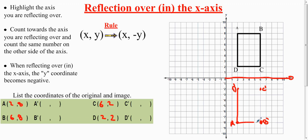A goes to B, B goes to C, and C goes to D. And there is your reflection over the x-axis.